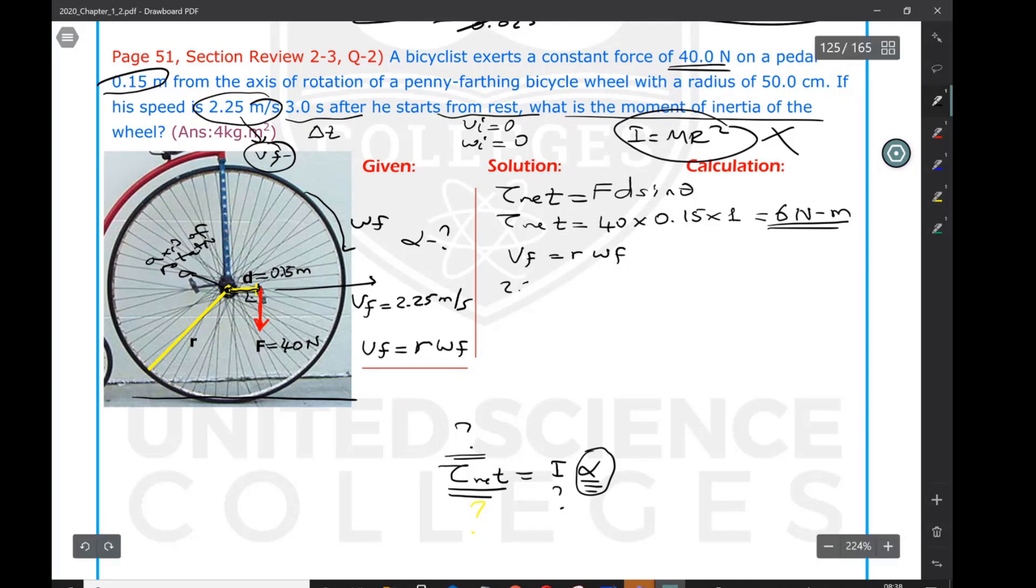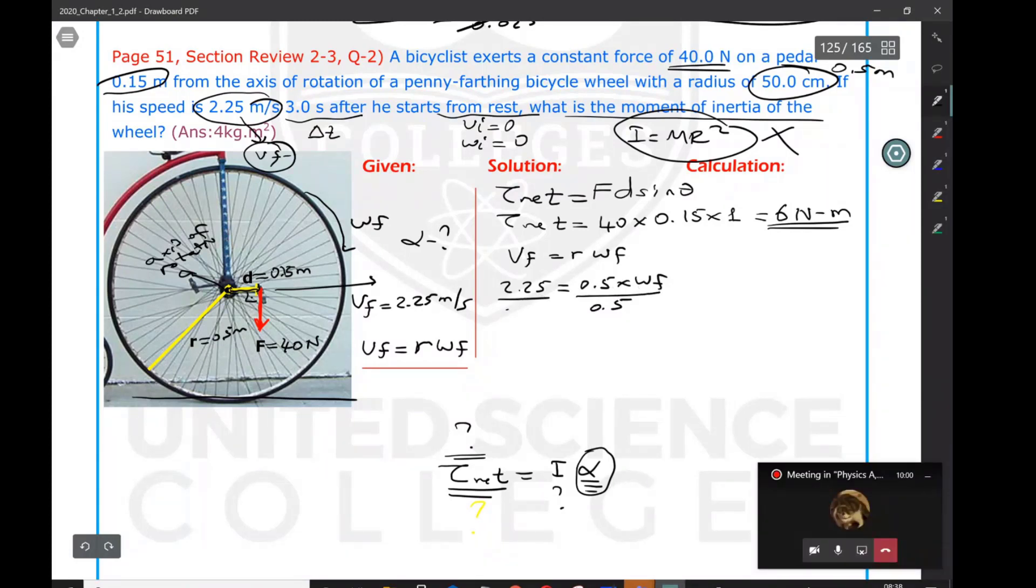V_f is 2.25 m/s. Radius of the bicycle tire is 50 cm, which equals 0.5 m. So 2.25 equals 0.5 multiplied by the final angular speed. Divide by 0.5, and we get the final angular speed, which is 4.5 rad/s. Initial angular speed is zero. Final angular speed we calculated. Now we're ready for calculating α.